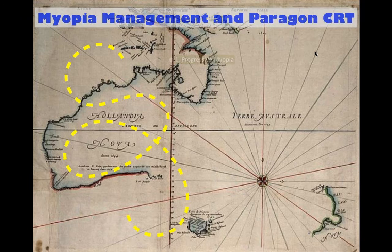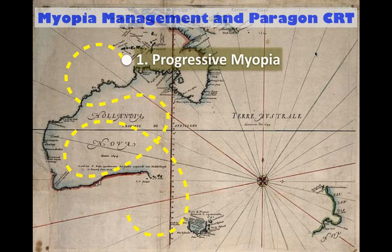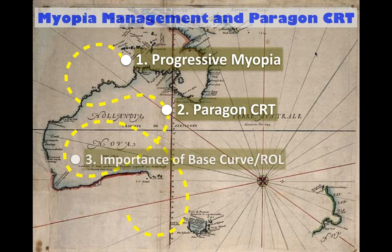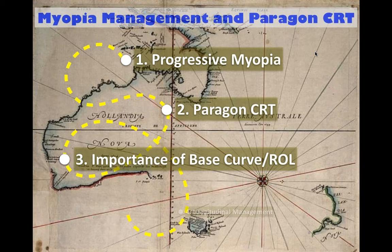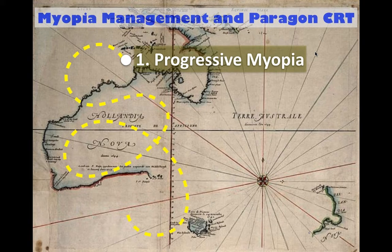As far as today goes, I'll commence with a metaphor of an ancient map of the early coastline of Australia — representing where we're at with our knowledge of myopia and its complexities, progressive myopia, and ways to manage and retard progression. I'm going to speak on progressive myopia, mention Paragon CRT and why I find it a great product, stress the importance of the base curve, treatment curve, and over-refraction, and look at longitudinal patient management.